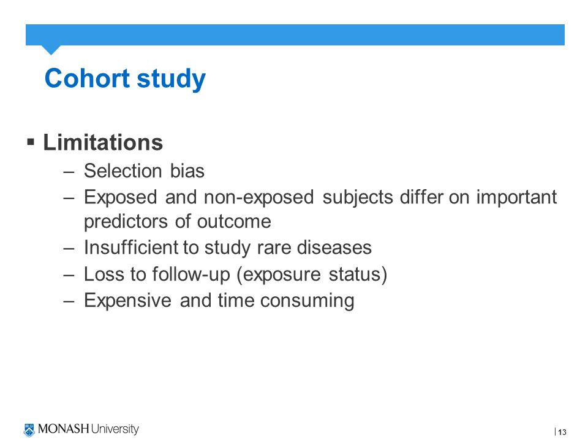In terms of limitations, selection bias can play a factor. Cohort studies are not well-suited for studying rare diseases, because we rely on large numbers to compare between exposure and non-exposure to risk factors — so if the disease is rare, identifying those exposed becomes difficult. Loss to follow-up is also a concern; for example, the Framingham study has been conducted for over 40 years and loss to follow-up increases significantly over time. Finally, cohort studies can be time-consuming and costly in terms of outcome assessment and patient follow-up.